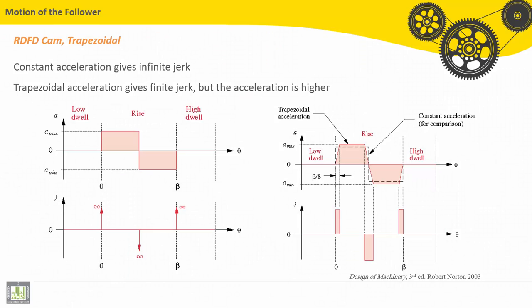We'll continue here for RDFD cam design with a trapezoidal function. This trapezoidal function for the acceleration can solve the problem of infinite jerk. So constant acceleration gives infinite jerk as shown here.